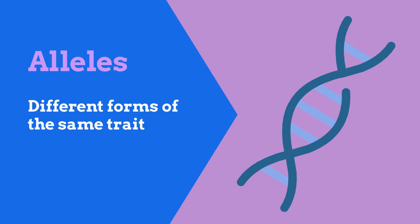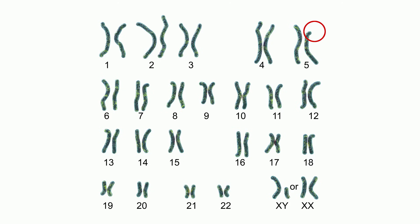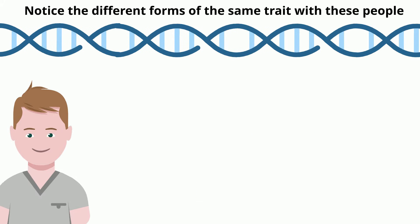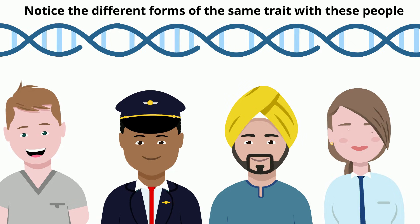Remember, an allele is a different form of the same trait. The seed can be round or wrinkled, or the form may take full or constricted. Pea plants receive half of the genetic information from the male and half from the female. Each parent contributes an allele. Together, the two alleles you inherit determine the type of trait that you will have.